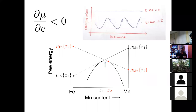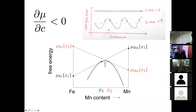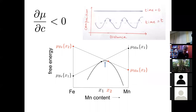This is called uphill diffusion, and it occurs when you have a free energy curve where the minima come at the manganese-rich and iron-rich regions. This is called spinodal decomposition, where a homogeneous solution will spontaneously tend to decompose into a composition wave.